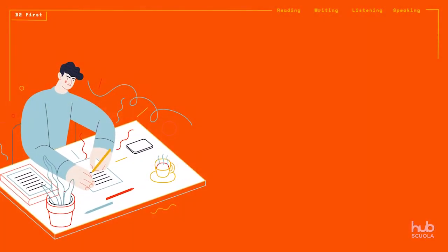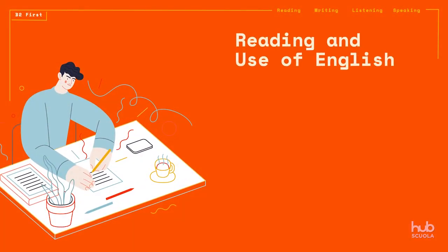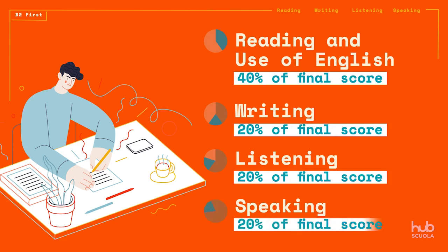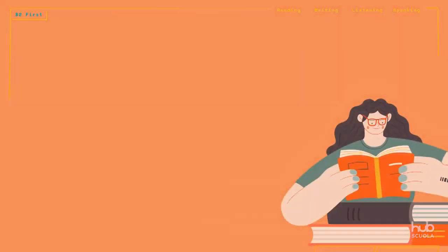The exam assesses four areas — reading and use of English, writing, listening and speaking — which are weighted equally when calculating the final score. In other words, each area is worth 20% of the total. Because the reading and use of English paper tests two skills, reading and language structure, it is worth about 40% of your final score, while the other three papers — writing, listening and speaking — are each worth about 20% of your final score.